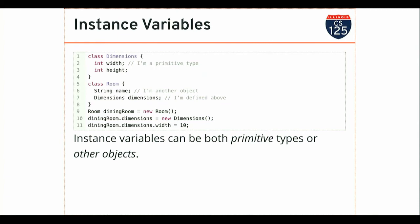The variables I define as part of my class declaration can be either primitive types or other objects. Here's a more complicated model involving two different types. Imagine I'm working on a program that allows people to rearrange furniture in a room using some sort of graphical interface. Information the program needs: the room's name to print on screen, and the room's dimensions so I can display it at the proper size. `Dimensions` here refers to another custom type I've created that has a width and a height.